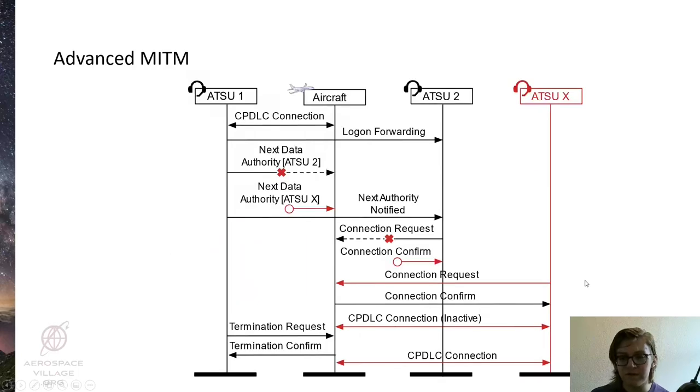We can also put together this attack, which is a little more complicated, so I'm just going to walk us through it. At its heart, this is taking a legitimate handover between ATSU-1 and ATSU-2, and blocking and injecting the relevant messages to make it appear to the aircraft that they are not, in fact, handing over to ATSU-2, but instead to ATSU-X, which is controlled by our attacker.